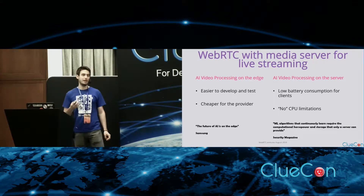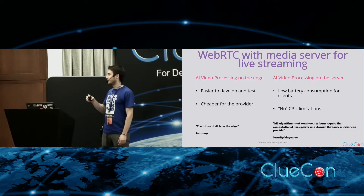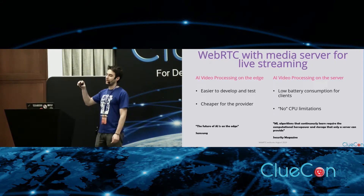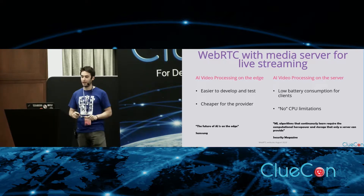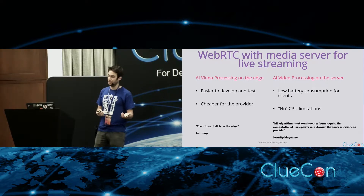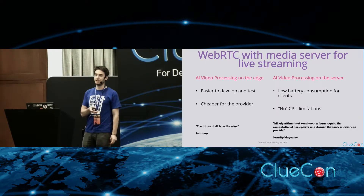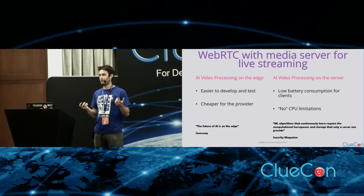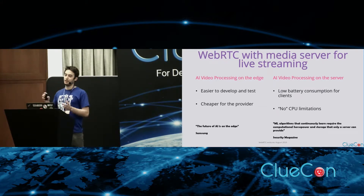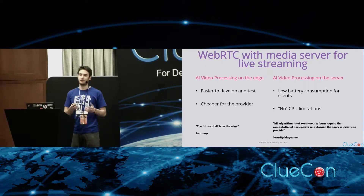With WebRTC live streaming via a media server, if you are going to implement AI, you have two options. You can have the media server handle the AI or machine learning processing in the cloud, or you can do that on the edge on the client side. Processing on the edge is much easier and doesn't have any cost for the implementer — pricing is something that matters. The server option is ideal for small devices that can't handle huge machine learning processing, so sometimes it can be the only option.